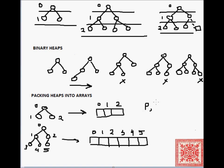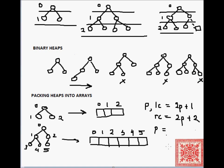If we're manipulating heaps as arrays, it's very important to figure out: given node number p, what's the index of the left child and the right child? The index of the left child in the zero-based array is 2p plus one, and the index of the right child is 2p plus two. For example, with p equal to two: the left child index is 2×2+1 = 5, and the right child index is 2×2+2 = 6. Note that index 6 is outside the array's boundary, so we must check for that when implementing heaps, since nodes may be missing a right child or even a left child.